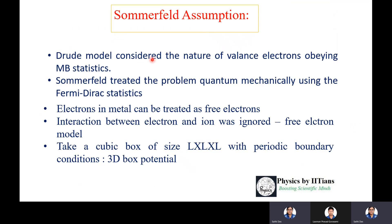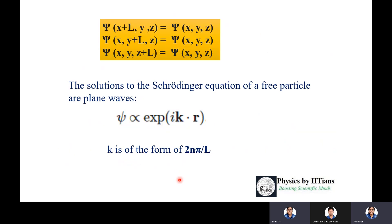The Drude model considered valence electrons obeying Maxwell-Boltzmann statistics. Sommerfeld treated the problem quantum mechanically using Fermi-Dirac statistics. Electrons inside the metal are treated as free electrons — we ignore the interaction between electron and ion. To introduce quantum mechanics, we apply a 3D box potential. We take a cubic box of size L×L×L, apply periodic boundary conditions, with potential V=0 within the box and infinite outside.